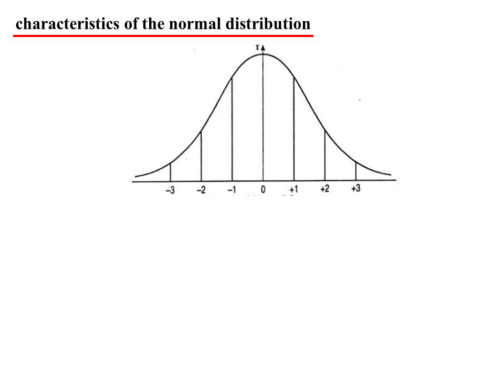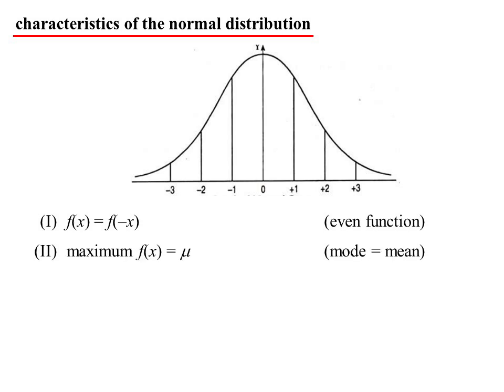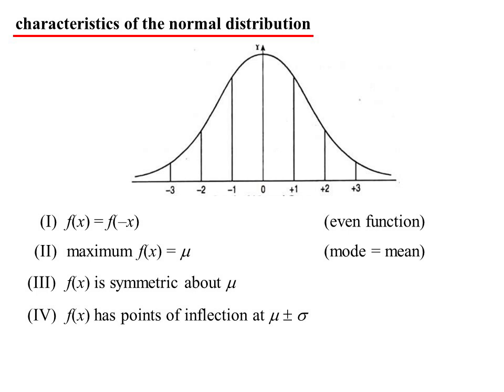So some characteristics of our normal distribution. So here it is, the classic bell-shaped curve. It's an even function. That's because of the symmetry there, we can see. So f(x) = f(-x). It has a maximum at the average. So in other words, the mode is equal to the mean. And it's symmetric. So it also means the median is equal to the mode and is equal to the mean. Here's an interesting one. The points of inflection occur at one deviation away. So at one deviation, that's where it changes the concavity on the bell-shaped curve. That's our normal distribution.